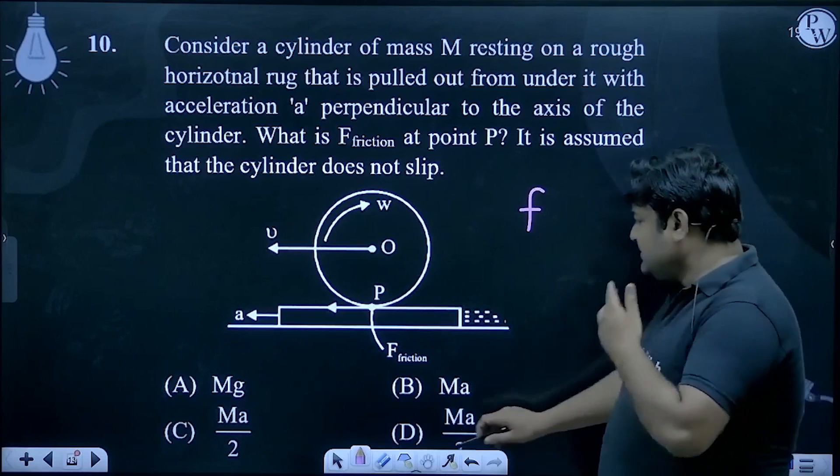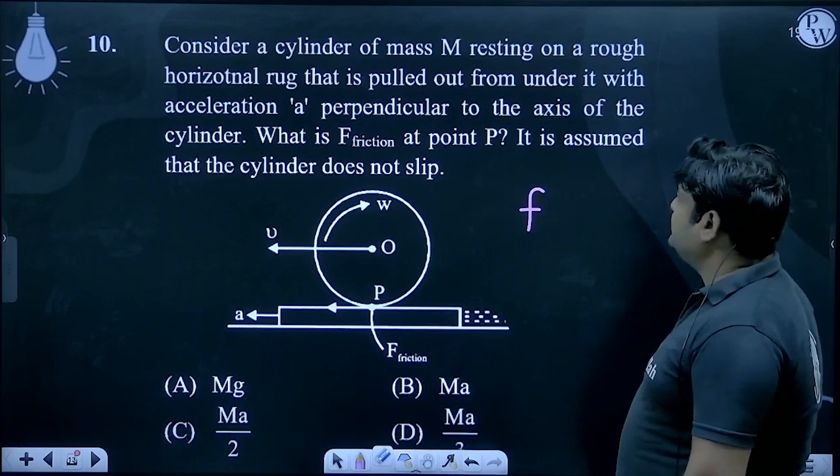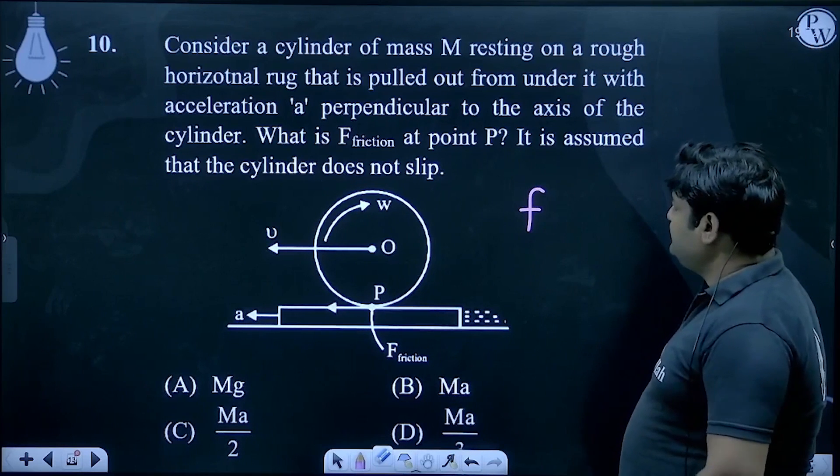Okay, mu is the formula, mu equals to tan theta F upon M. So, acceleration we have to get out.